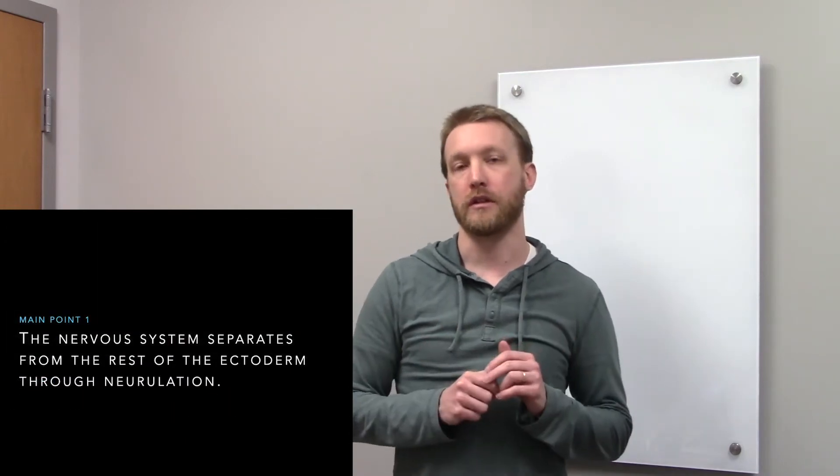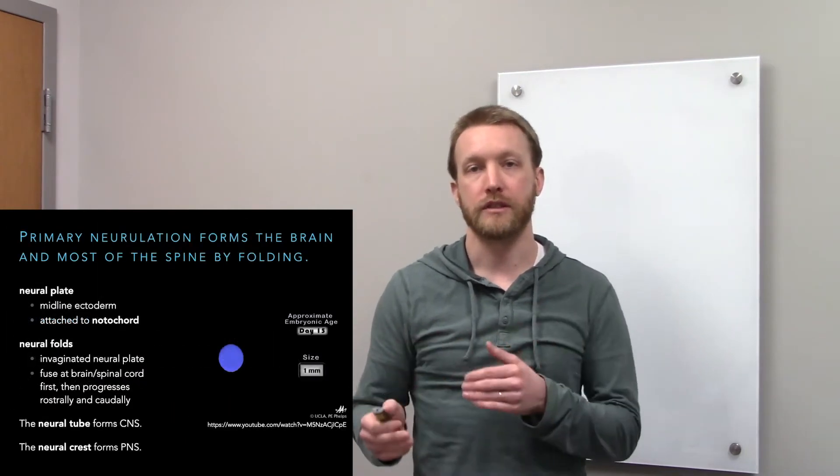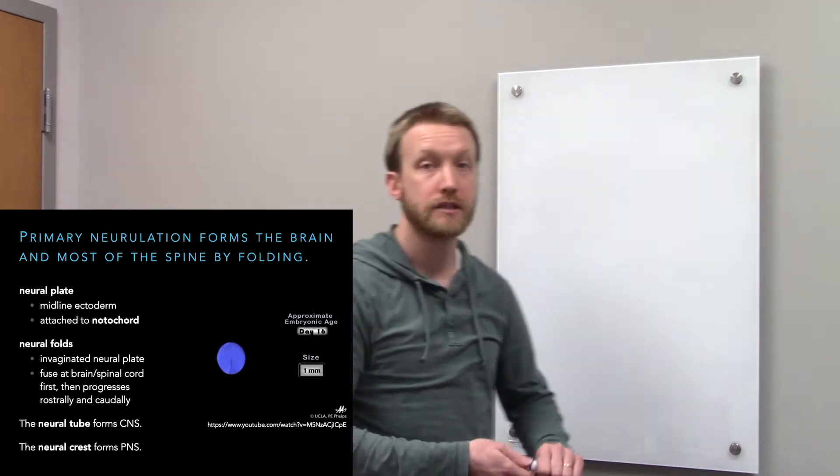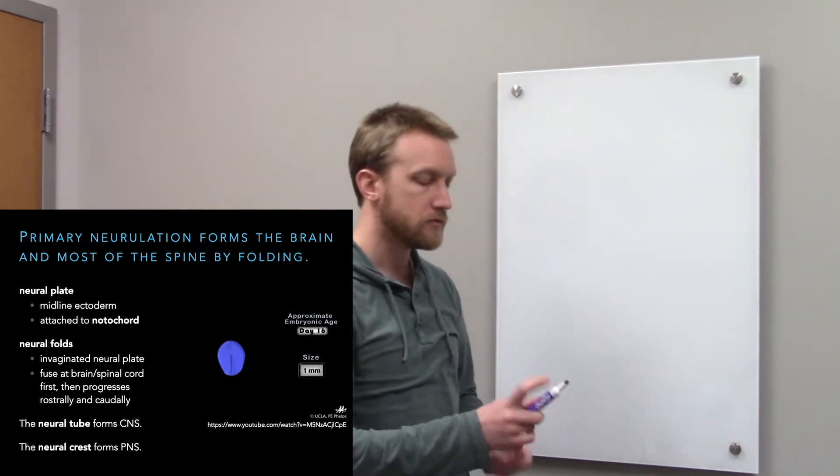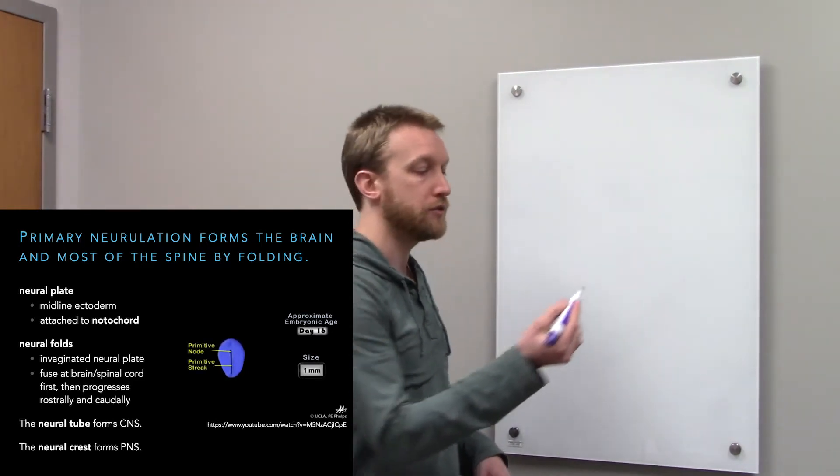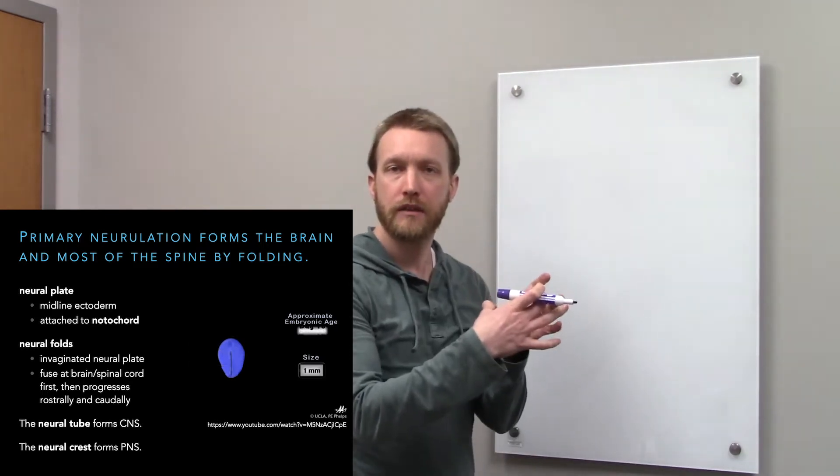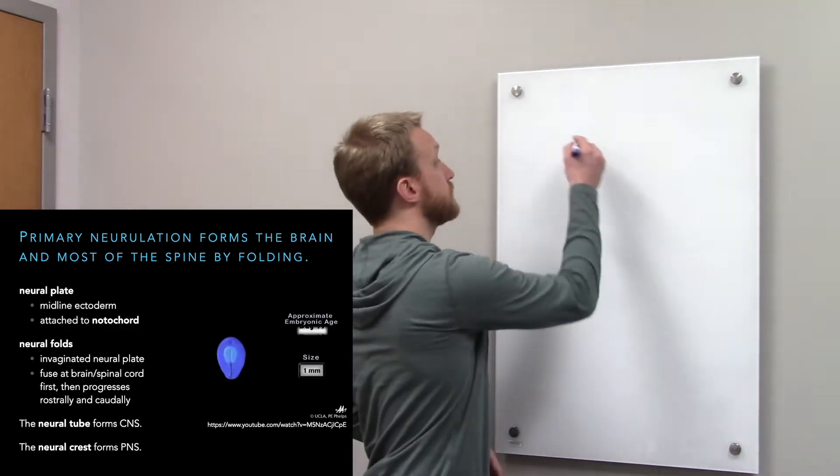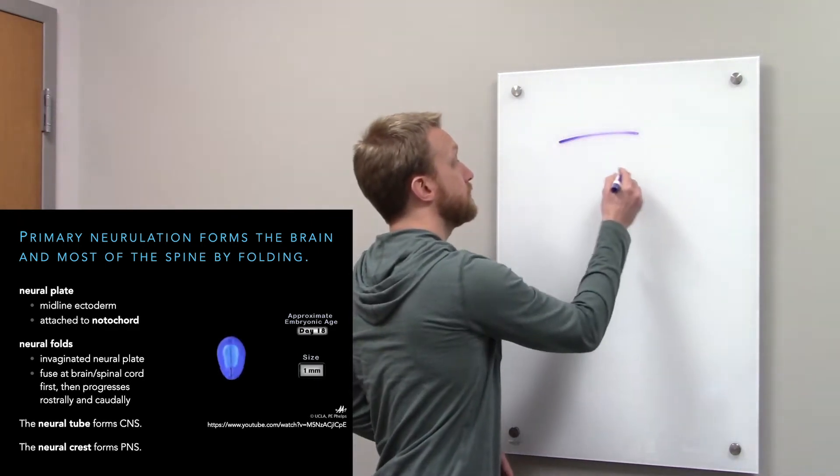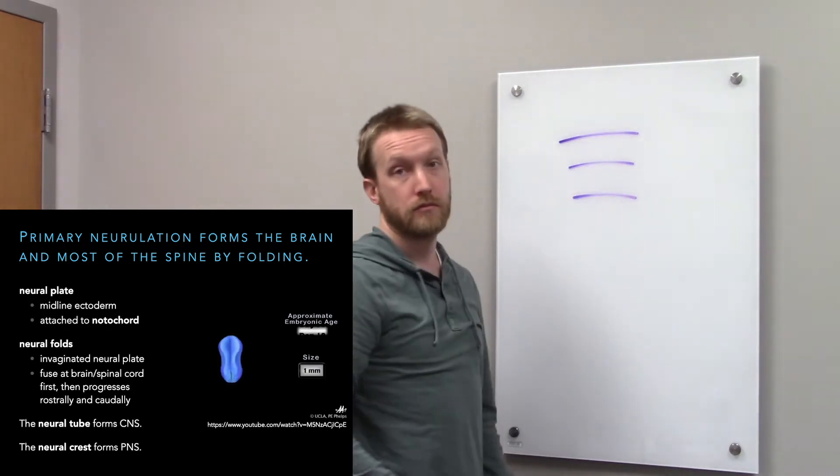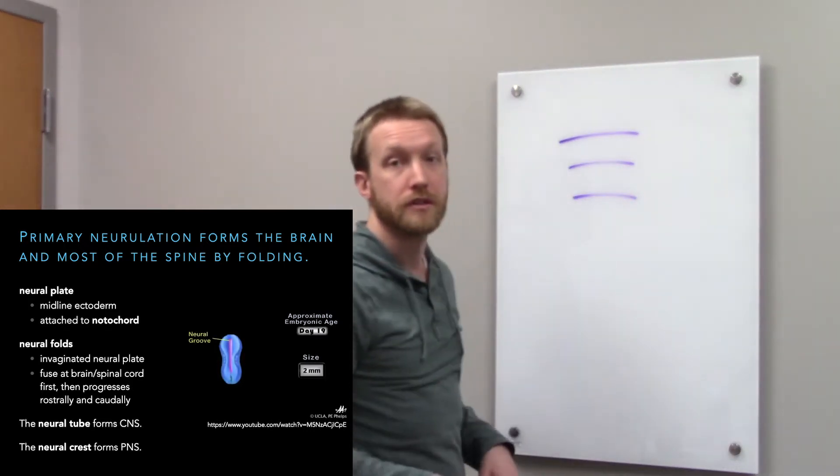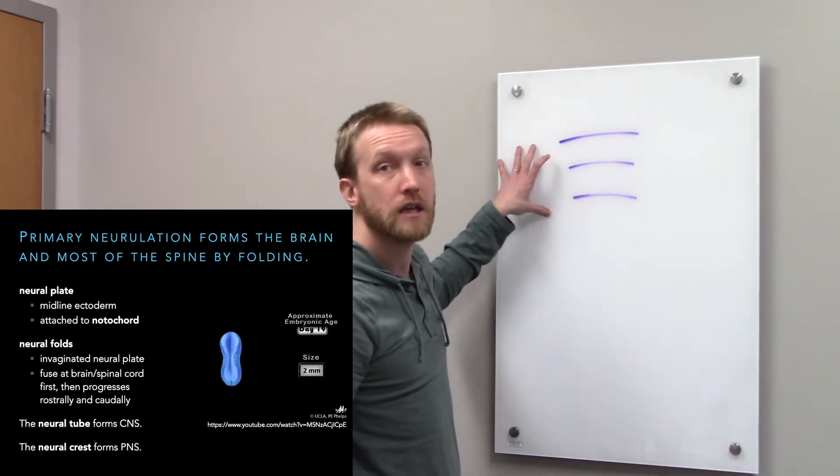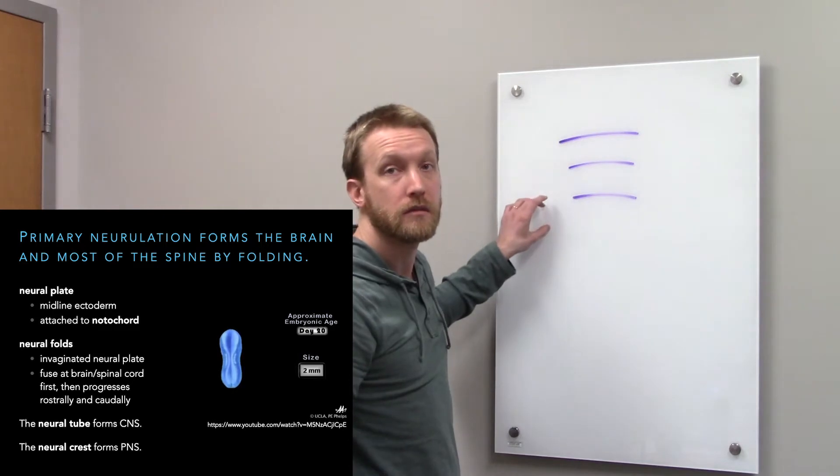But let's talk about neurulation first. That's the process where our nervous system separates from the rest of the body. Now while this movie plays, I'm going to draw out what's going on in cross section. We've got our three germ layers: ectoderm, mesoderm, endoderm. Three basic layers, ectoderm on the outside, mesoderm in the middle, endoderm buried.